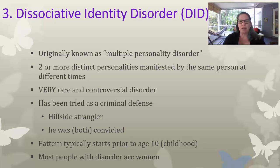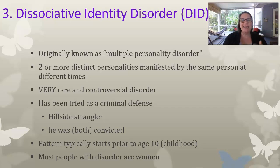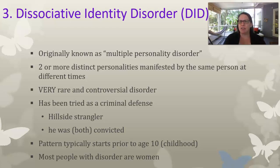The Hillside Strangler, a serial killer in California, tried to say that it wasn't him that did it — it was his alternate personality that committed all the crimes. This is one of those cases where it becomes super controversial because the feeling was that he was just lying, that he got caught and was trying to get out of it. In that case, it didn't work. I don't think it's ever actually worked as a criminal defense. In the Hillside Strangler case, he was convicted — they convicted both of his personalities.